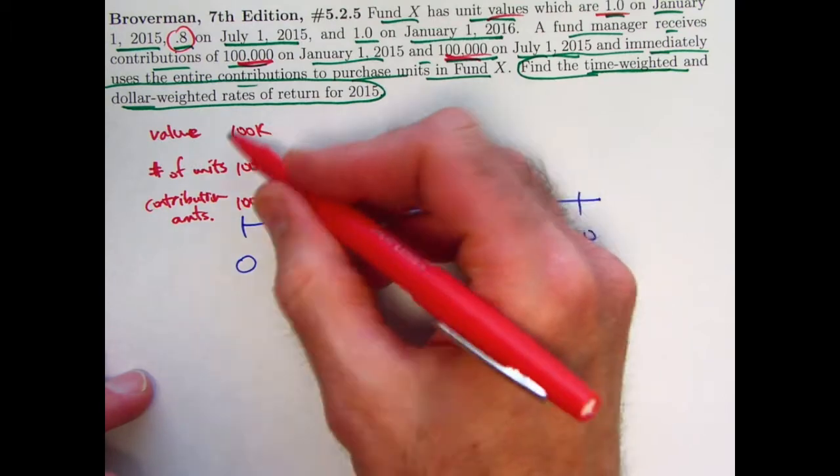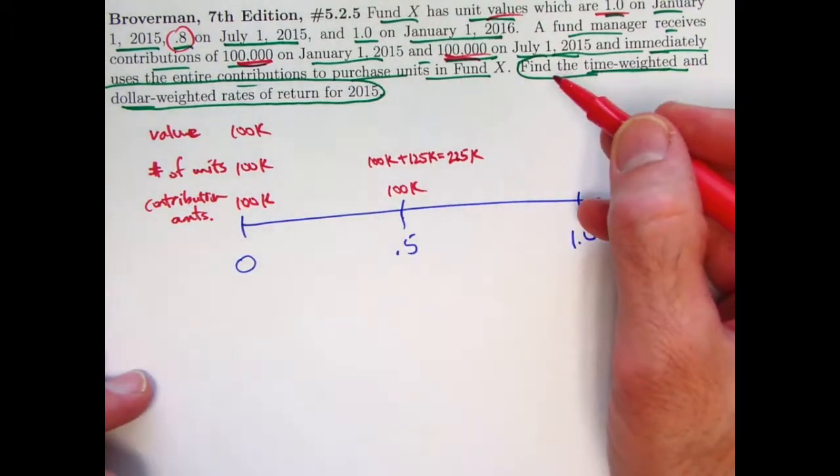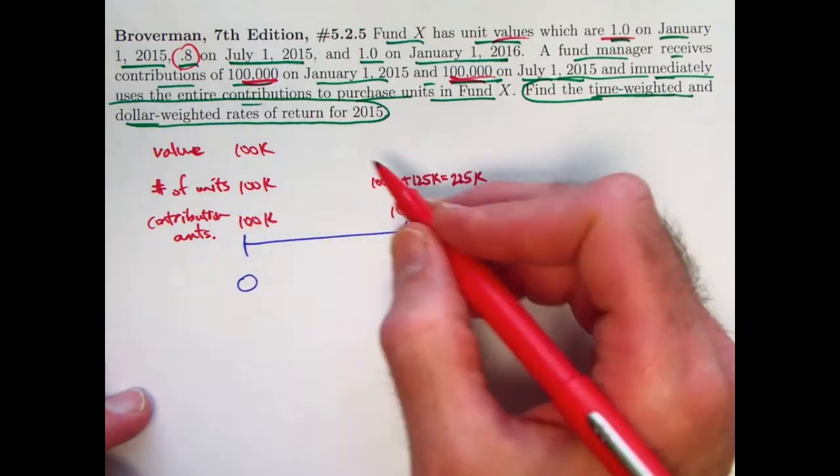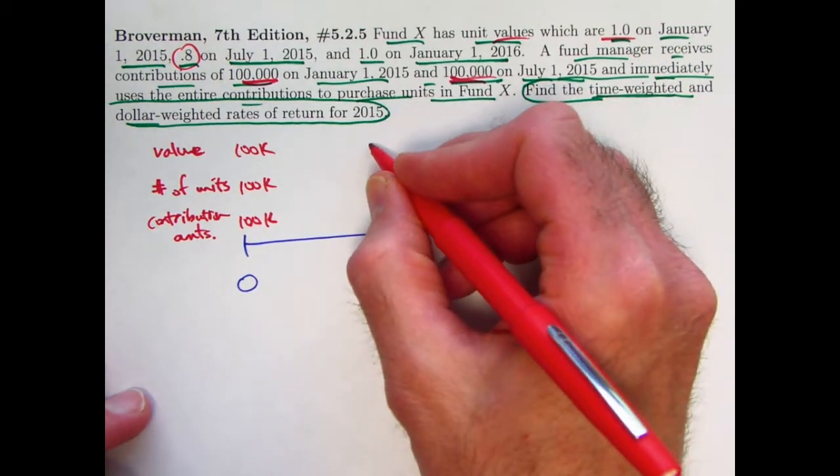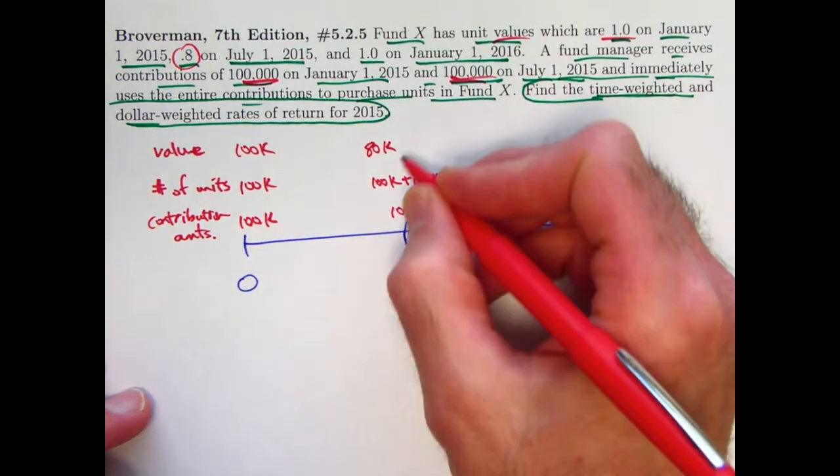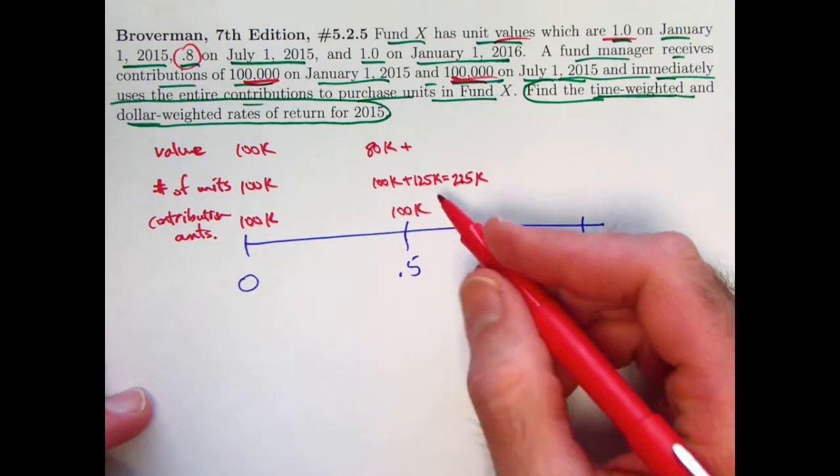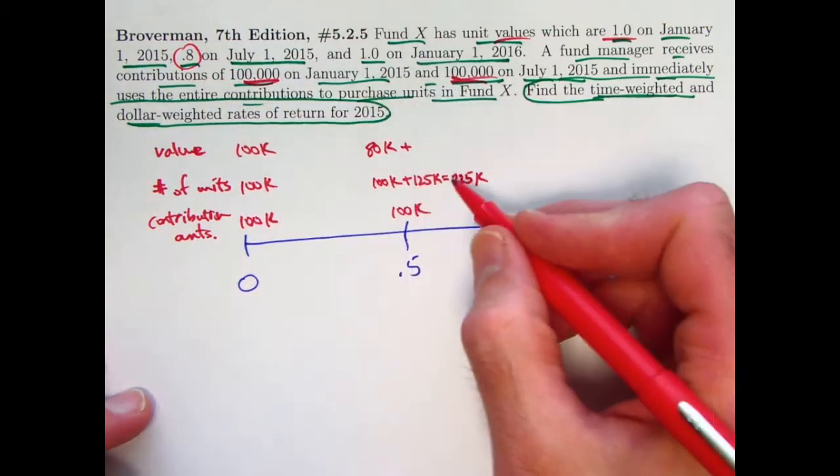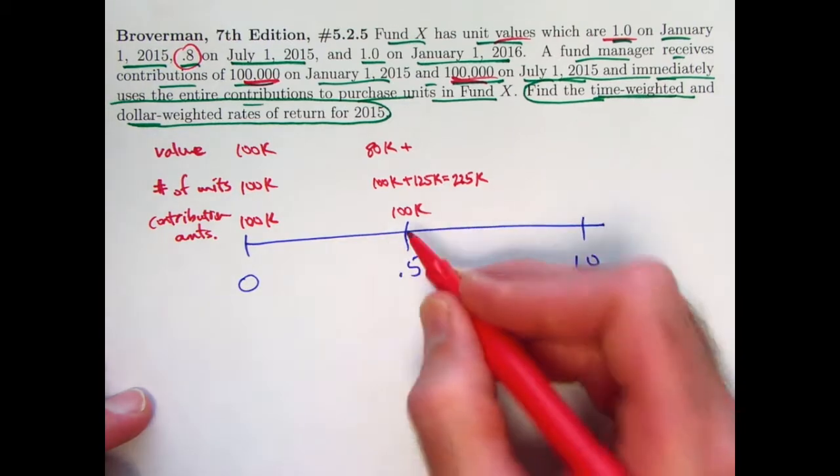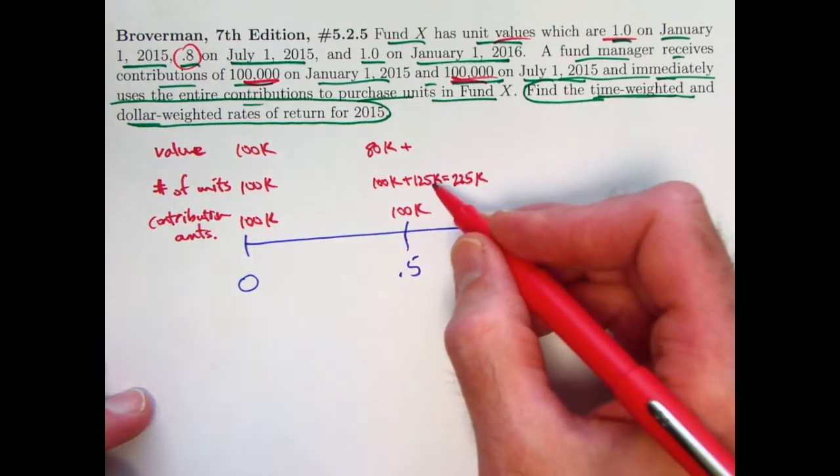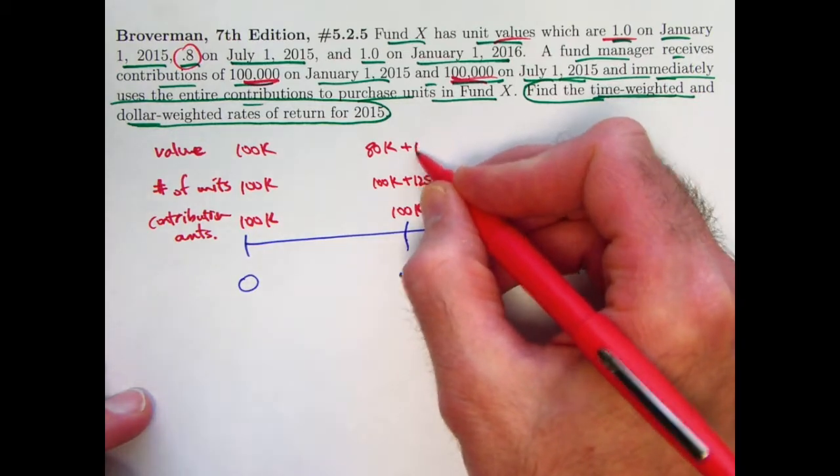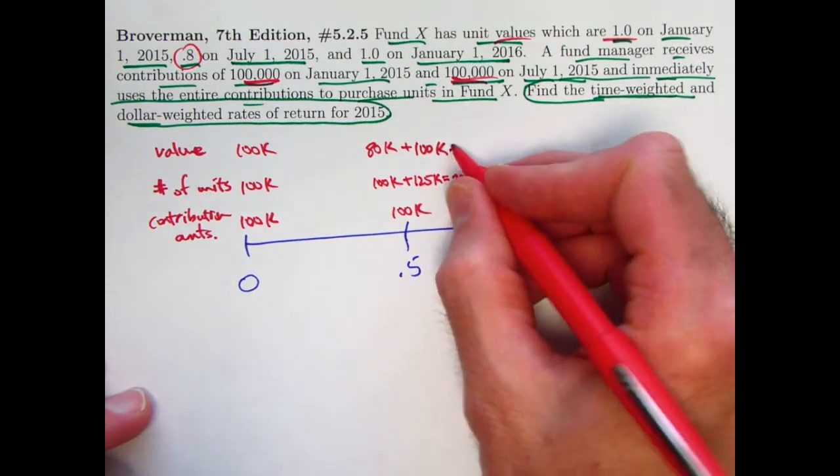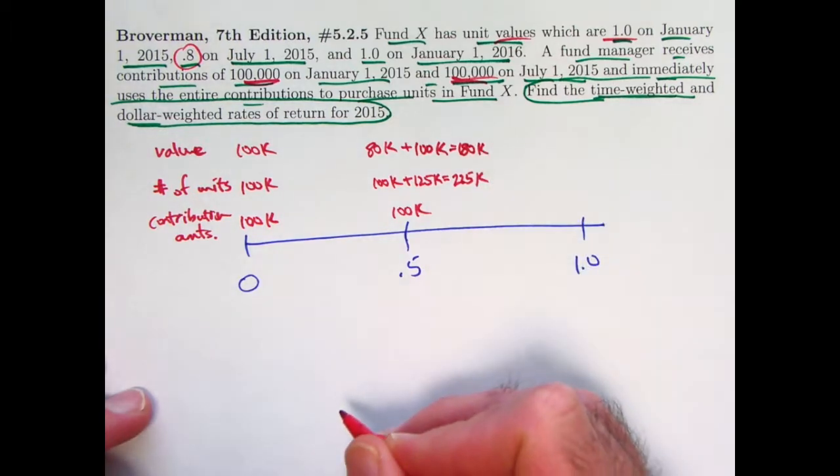What are the values of those units? Well, the first 100,000 dollars of values of units during the first half of the year went down by 20%. Since the unit prices went down from 1.0 to 0.8, this 100,000 dollar investment went down in value to 80,000, 0.8 times 100. How about the value of the next one, this 125,000 units? Well, they cost 0.8 per unit. 125,000 times 0.8 is 100, same as the contribution amount. So this next 125,000 units has a value of 100,000, same as the contribution amount, for a total value of 180,000.